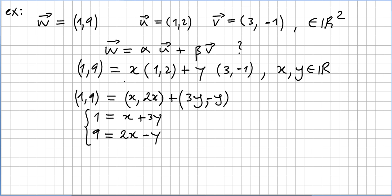So (1,9) has to be x times 1 is x, x times 2 is 2x, y times 3 is 3y, y times minus 1 is minus y. So 1 has to be equal to x plus 3y and 9 has to be equal to 2x minus y.